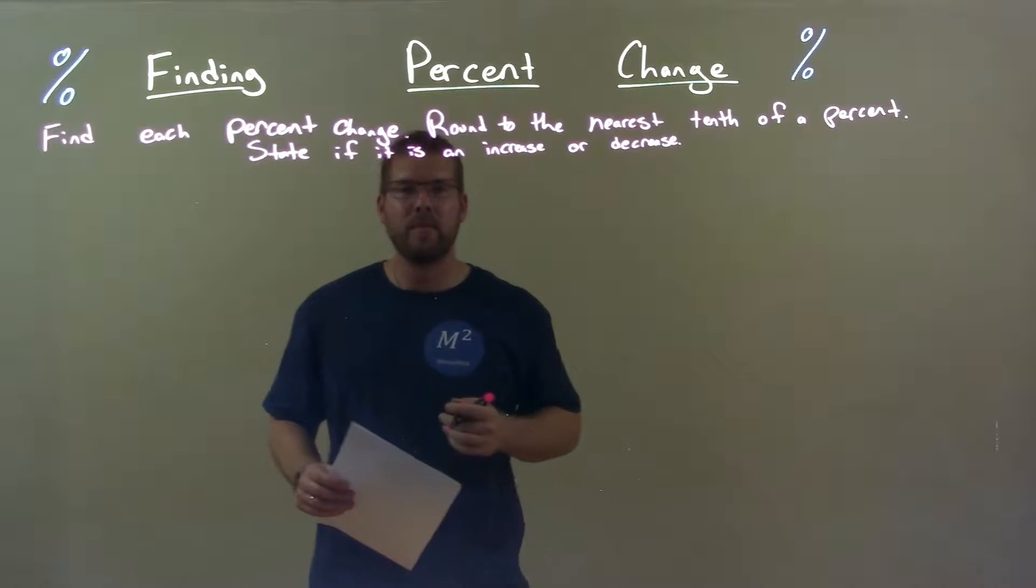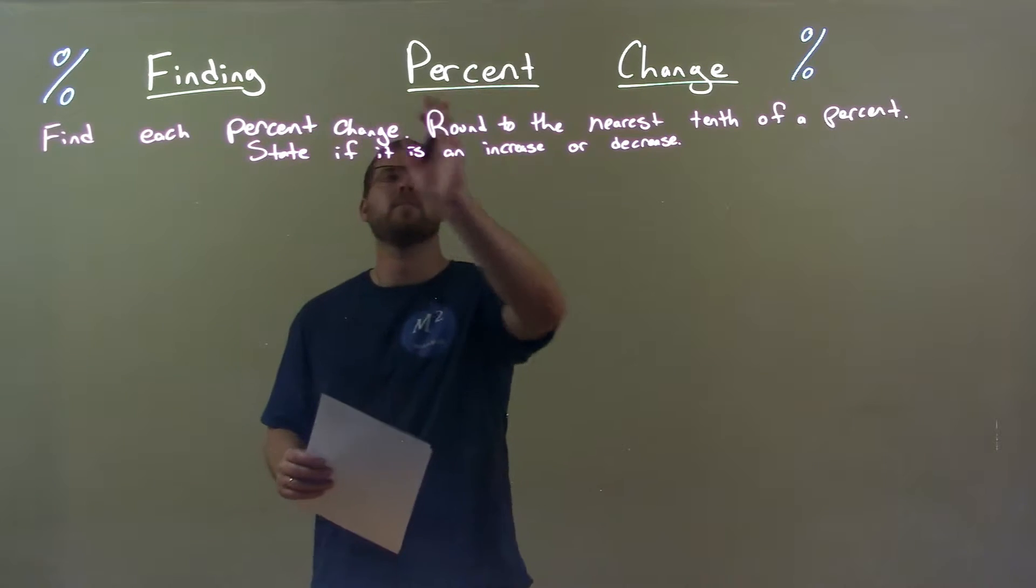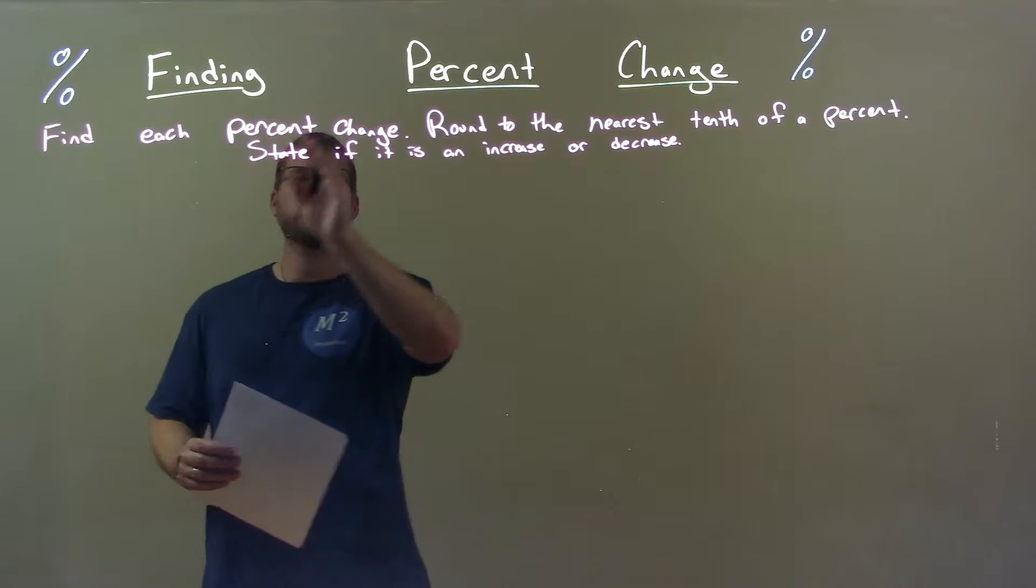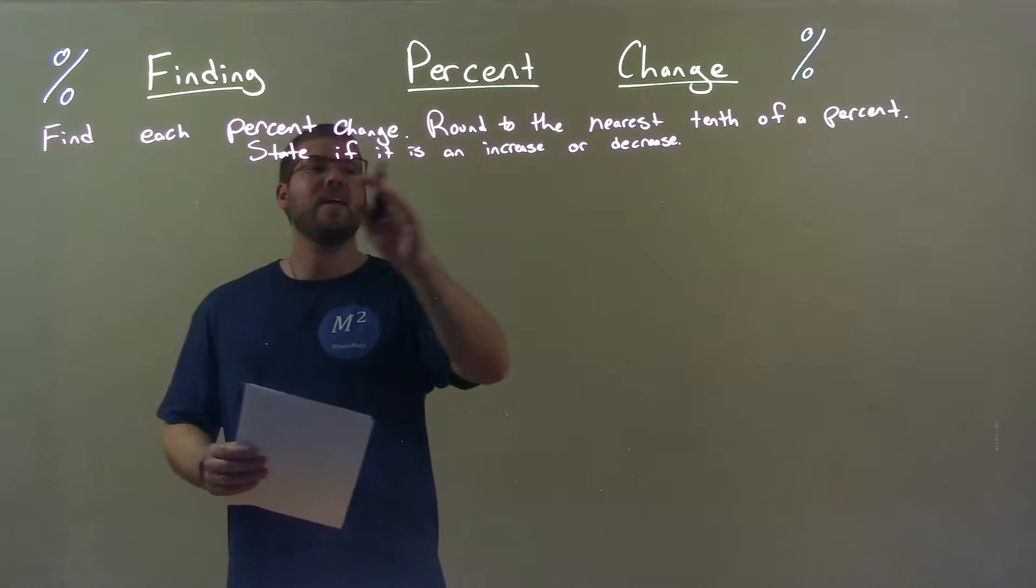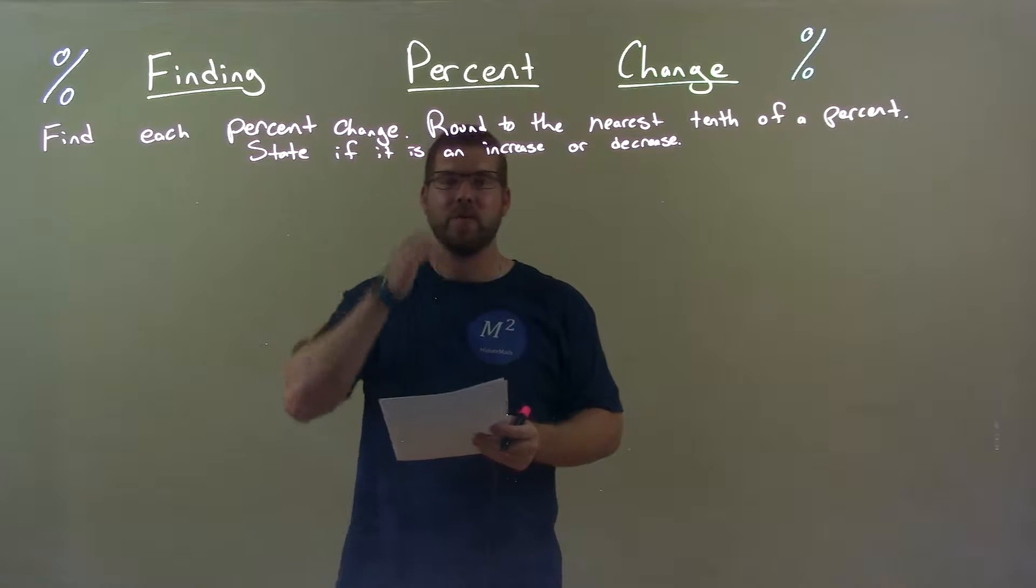Hi, I'm Sean Gann and this is Minute Math. Today we're learning about finding percent change. We're going to find each percent change and round to the nearest tenth of a percent and state if it's an increase or a decrease.